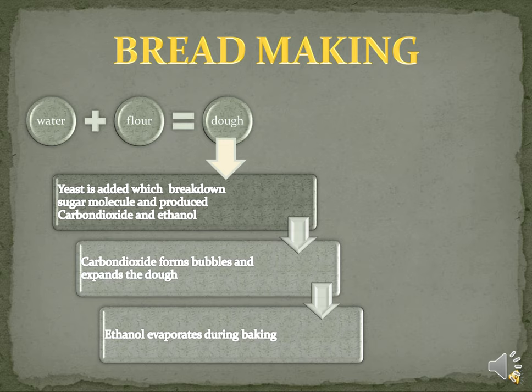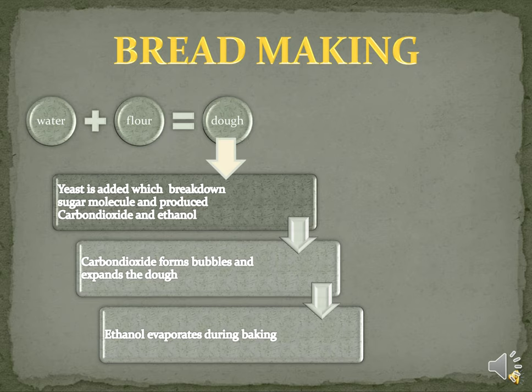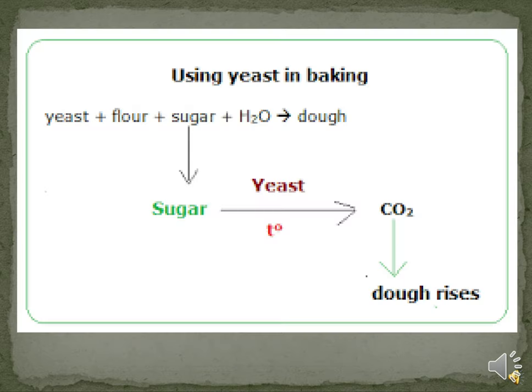Now let's discuss the process of bread making. Since a very long time, humans have been using yeast to make bread. This chart shows how bread is made using yeast. Firstly, water and flour are mixed together to form a dough, then yeast is added, which breaks down sugar molecules and produces carbon dioxide gas and ethanol, which is a kind of alcohol. This process is known as fermentation.